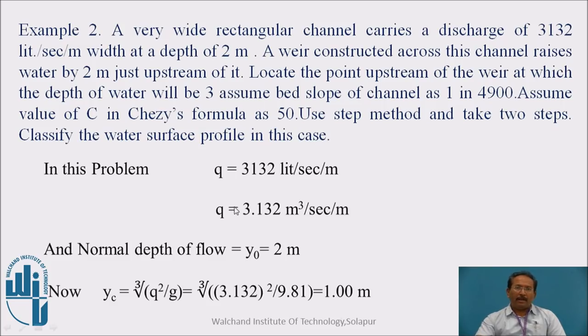A very wide rectangular channel carries a discharge of 3132 liters per second per meter width at a depth of 2 meter. A weir constructed across this channel raises the water level by 2 meter, just upstream of it. Locate the point upstream of the weir at which the depth of water will be 3 meters. Assume bed slope of the channel as 1 in 4900. Assume value of c, here Chezy's formula is used, as 50. Use step method and they asked to go for two steps. Here small q is directly given to us, 3132 liters per second per meter, but it is in liter, we are converting it into meter cube. Divide by 1000, q equals 3.132 meter cube per second per meter.